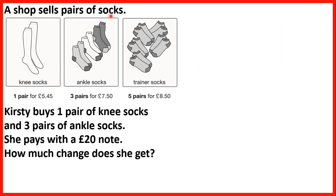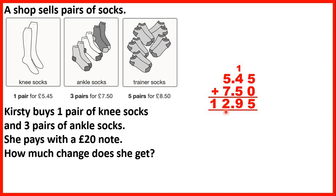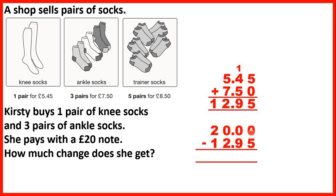A shop sells pairs of socks. Kirstie buys 1 pair of knee socks and 3 pairs of ankle socks, and pays with a £20 note. How much change does she get? 1 pair of knee socks is £5.45 and 3 pairs of ankle socks is £7.50, so adding those together gives us £12.95. To find the change we take what she pays and subtract what she spent: £20.00 minus £12.95, and that gives us £7.05.